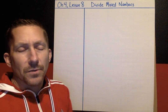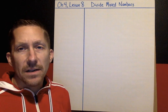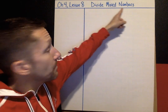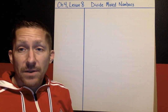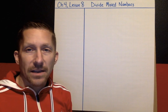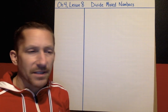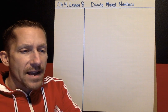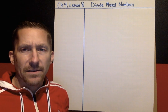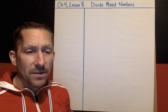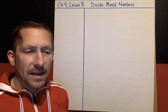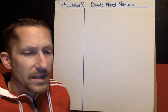Hi kids. Welcome to the last lesson of Chapter 4. This is Lesson 8. Today we're going to learn how to divide mixed numbers. When you're looking at the title of this lesson, Mixed Numbers, hopefully you're thinking that's a whole number and a fraction together. A lot of this lesson is going to look familiar — we've talked about the main parts before, and now we're going to be combining a few things together. Let's go ahead and get started.